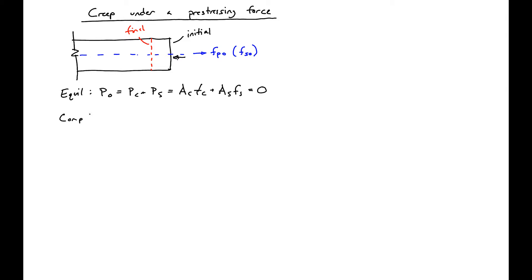Next is compatibility — this is where we're going to take into account our pre-stressing force. We have delta Epsilon C equals delta Epsilon S. In this case we have no initial concrete strain, but we do have an initial steel strain.